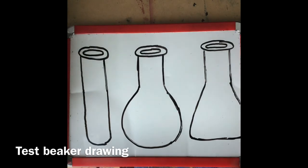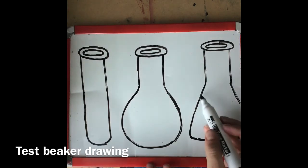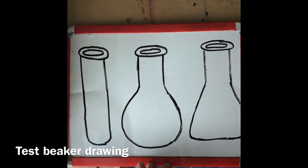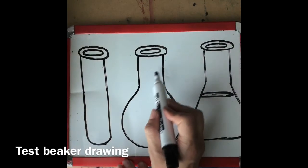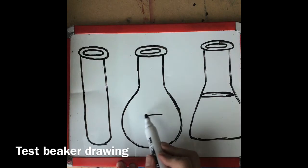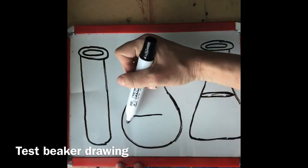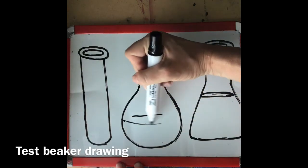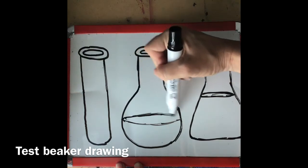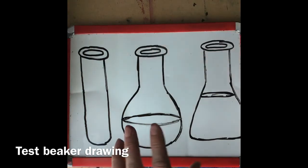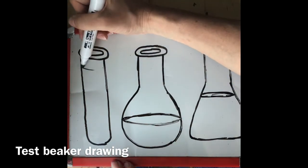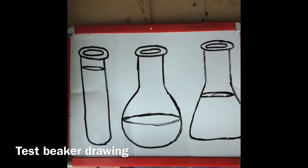Now to make this look more three-dimensional I'm going to add another ellipse on the inside of my beaker. That's going to be the liquid and you can decide where that liquid is as far as how full or not full your beakers are. Now how big of an ellipse you make is going to decide the angle that the beaker is sitting at. Now they're looking a little more sciency.